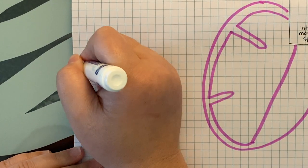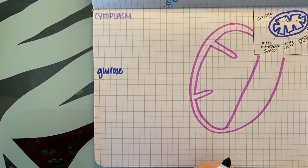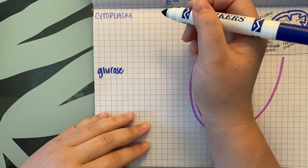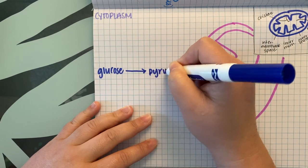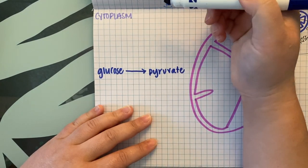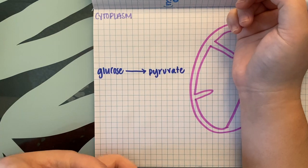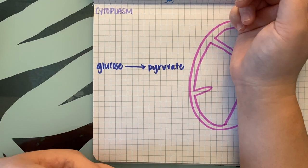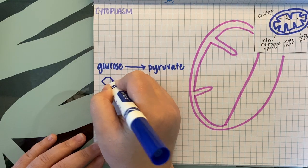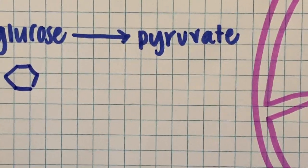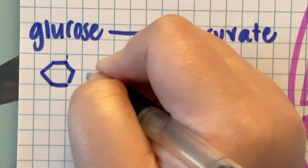Glycolysis is a simple process that we'll draw in one step, though it actually takes about 15 different catalyzed steps with 15 intermediate molecules. You take glucose — a six-carbon sugar shaped like a ring — and it gets converted to a molecule called pyruvate. Each junction of two lines in the ring structure represents a carbon: carbons one through six.